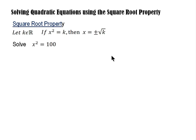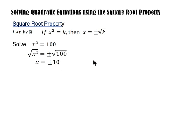Solve x squared is equal to 100. To solve for the value of x, all we have to do is to apply the square root property. We will take the square root of both sides of the equation. So the square root of x squared is equal to plus or minus the square root of 100. So we have x is equal to plus or minus 10 because the square root of 100 is 10. The solution set would be x equals 10 and x equals negative 10. To verify, we plug in these values into the original equation: 10 squared equals 100, correct; and negative 10 squared equals 100, correct. So the solution set is correct.